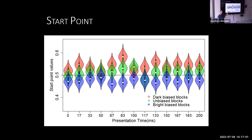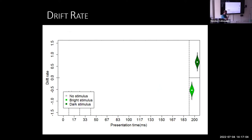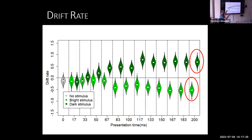The start points aren't really the interesting part of this story because there's not much systematic variation across conditions. More interesting are the drift rates. In the longest presentation time — 200 milliseconds — a dark stimulus evokes a positive drift rate and a bright stimulus evokes a negative rate, and they look roughly symmetrical about zero. As presentation time gets shorter, these converge to the same value, because you're showing a mask with a stimulus so briefly that people can't see what's there. When you show absolutely nothing, the rate is very close to zero.